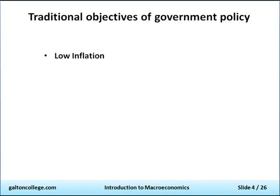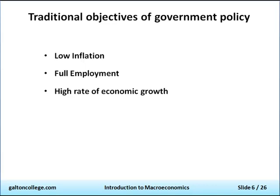The traditional objectives of government policy are normally looking at things like low inflation, which is considered to be desirable. The government would also try to get full employment — that's also desirable — as is a high rate of economic growth, a balance of payments equilibrium, and to get some fairness into the system so we don't have a few very rich people and the vast majority of the population living in abject poverty.